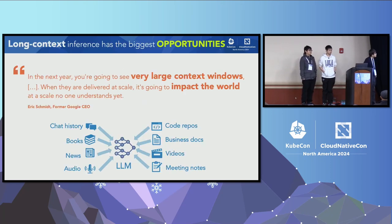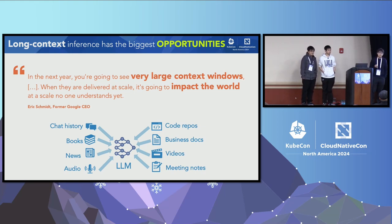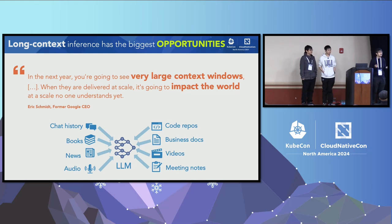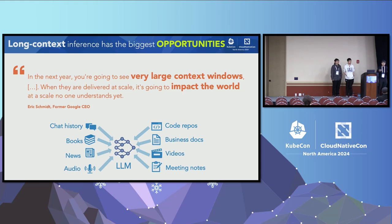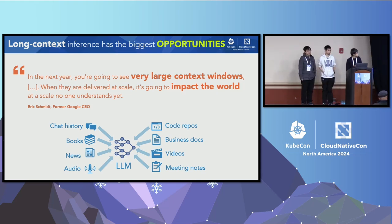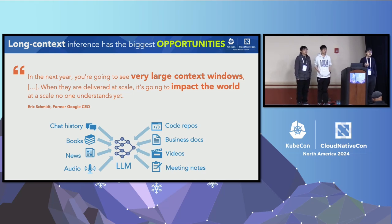Why long-context? Long-context presents the biggest opportunities in the next few years. For example, you can feed hundreds of books to your LRM and immediately start asking detailed questions. You can dump a big code repository into your LRM and ask it to create new test cases or add new features. You can also upload hours of videos and ask it to summarize memorable moments. Long-context inference capability is believed to be the key enabler for the next wave of LRM innovations.